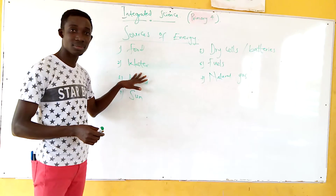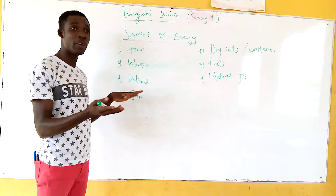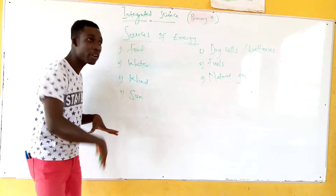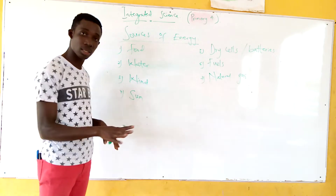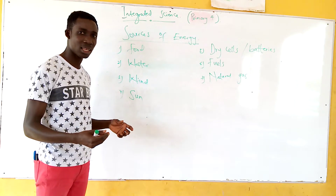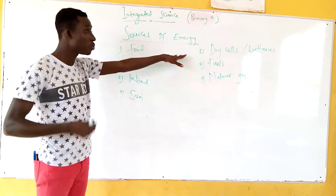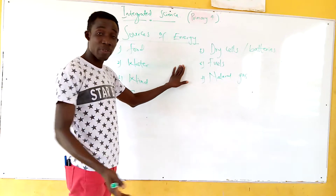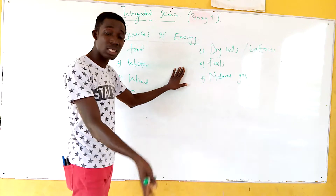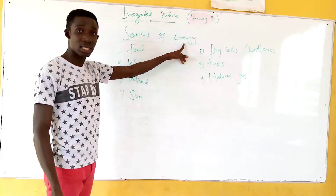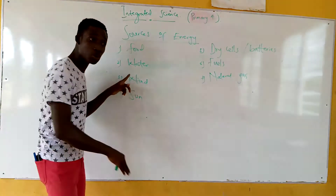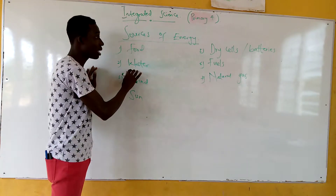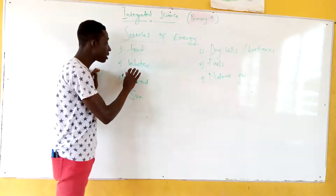The next is water. Even moving water — a stream or a river that's moving — it could carry stones. That's its work. Energy is the ability to do work, so anything that can perform a particular function or activity has energy in it. Moving a stone from one place to another means water has energy in it. So we can get energy from water.